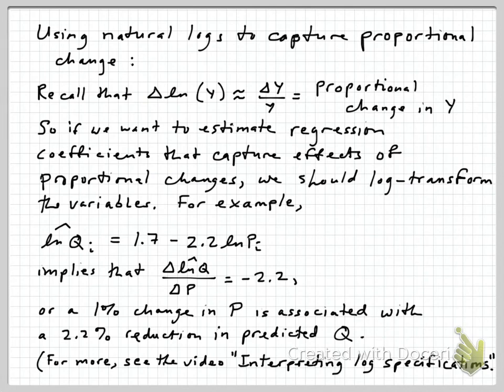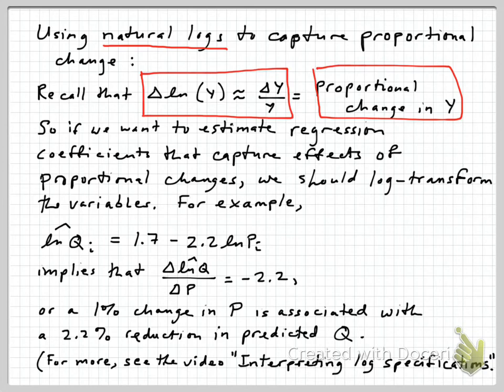Now, proportional changes in regression can be captured, and the nicest way to do that is to use log transformed variables. And we have a separate video talking about that, but just to reiterate really quickly how this works, recall that the change in the natural log of any variable, such as y, is approximately equal to the change in y divided by y, and that's due to the derivative of the natural log being 1 over y, and consequently we can interpret that as essentially the proportional change in y.